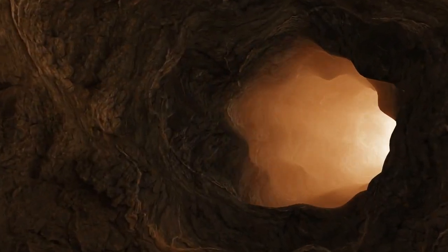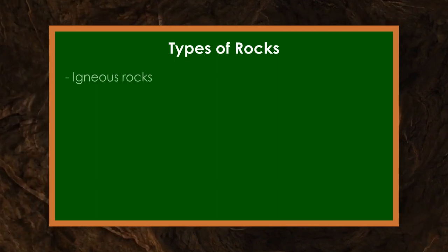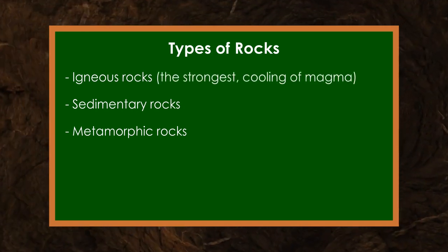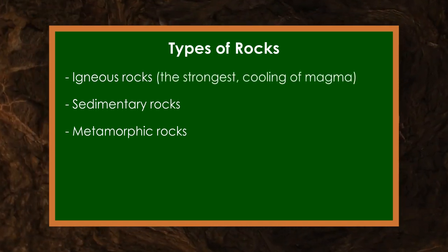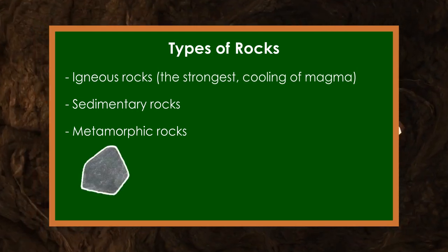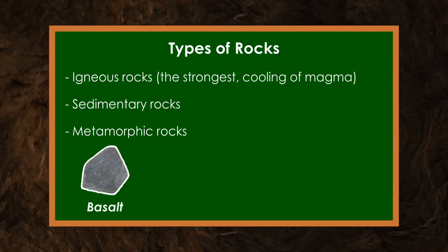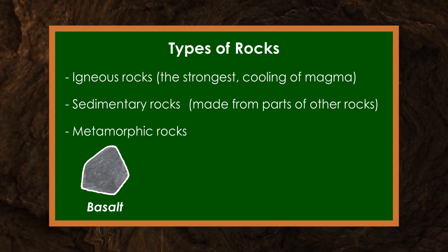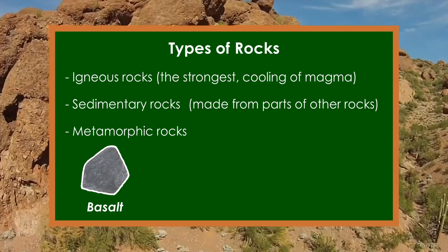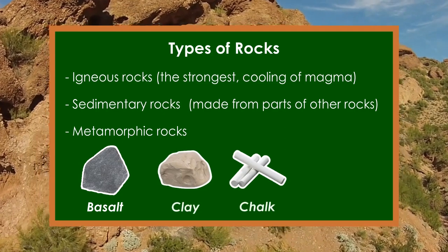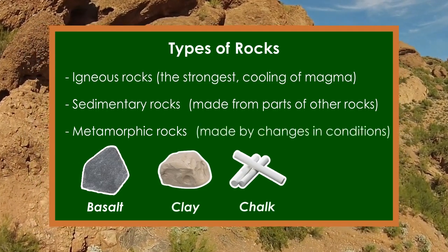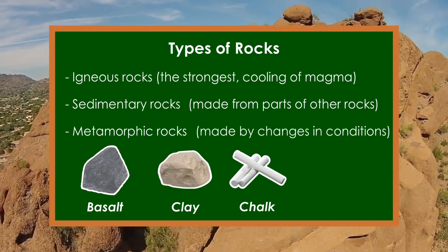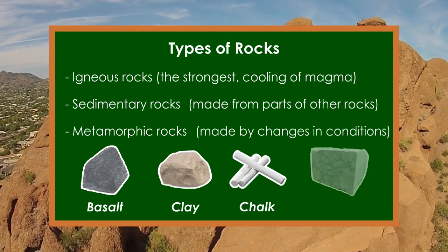The rocks that make up the Lithosphere are divided into three groups: igneous, sedimentary, and metamorphic rocks. Igneous rocks are the strongest, and they are formed due to the cooling of magma on the Earth's surface. An example of igneous rocks is basalt, of which the ocean floor is composed. Sedimentary rocks are formed by the deposition of various substances of other rocks, the combination of which creates new rocks. Nice and very familiar examples of these rocks are clay and chalk. Metamorphic rocks are formed due to the changes in geographical conditions of a certain area, whereby a certain rock changes its original characteristics and acquires new ones. A good example of them is marble.